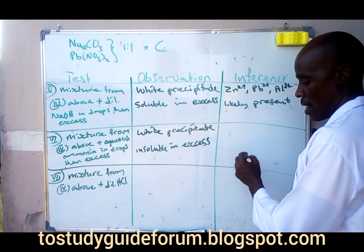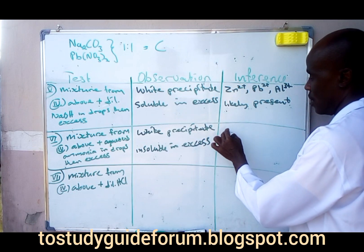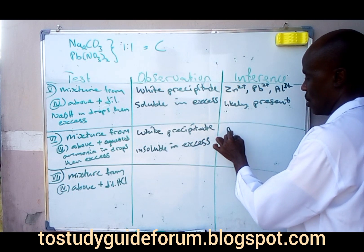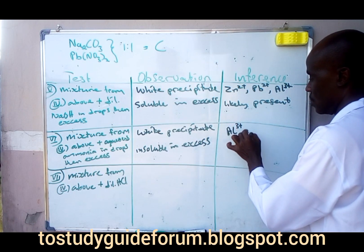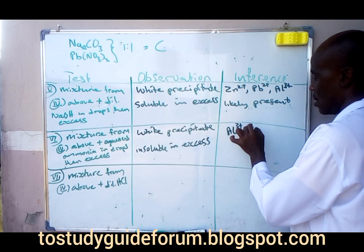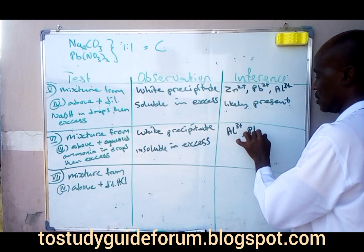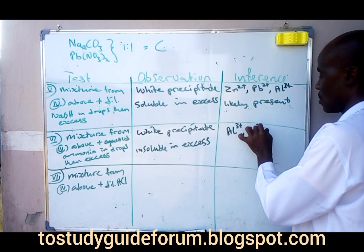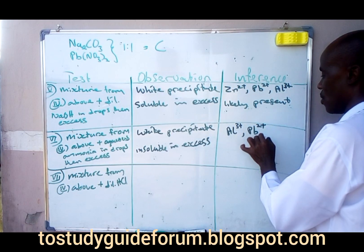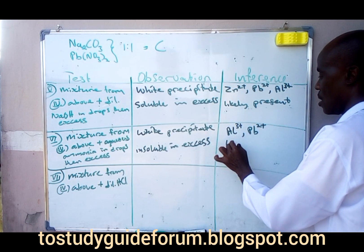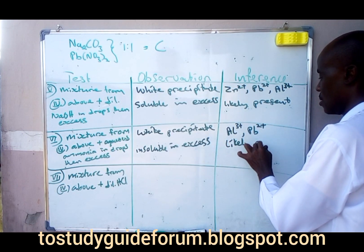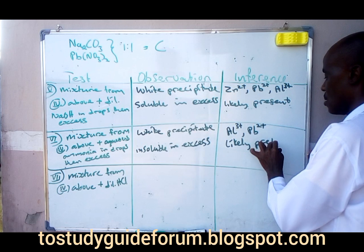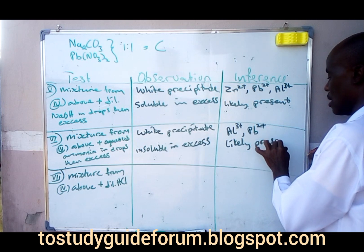This indicates that aluminium ion or lead ion is likely present, since the white precipitate is insoluble in excess aqueous ammonia.